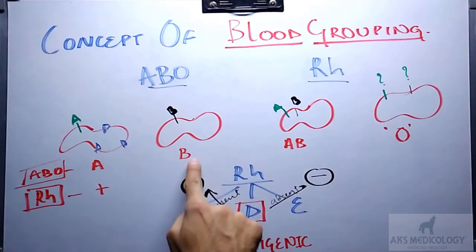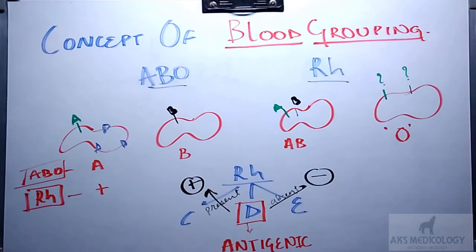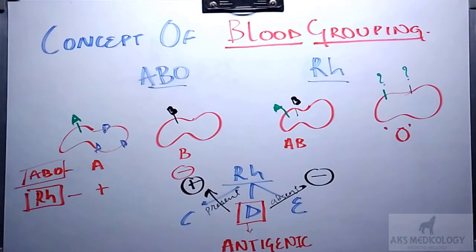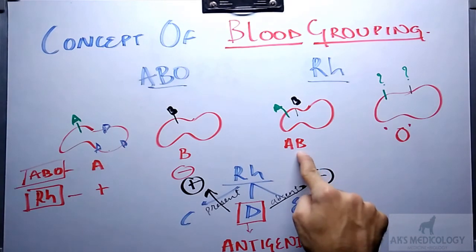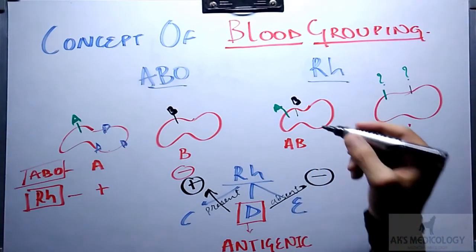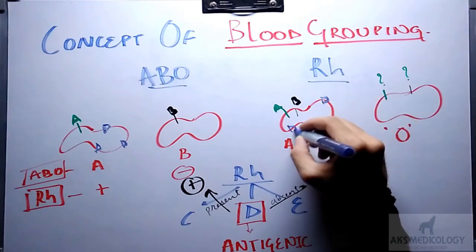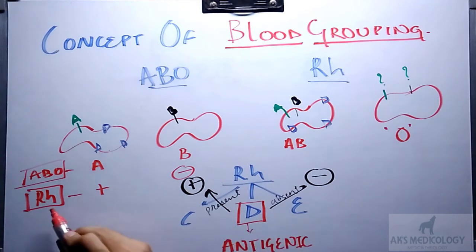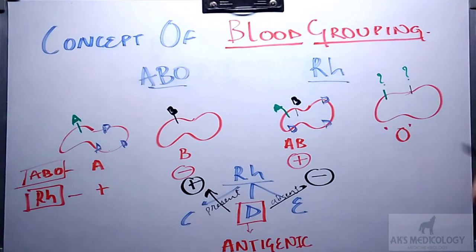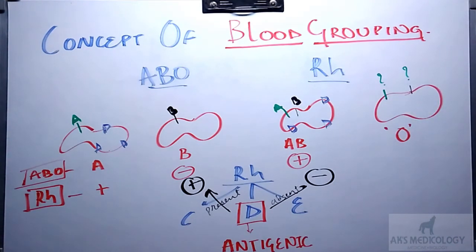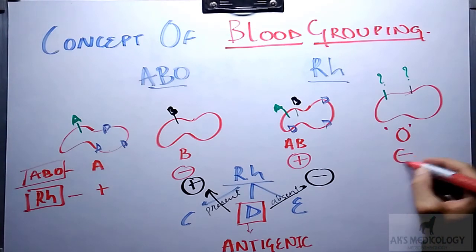For example, an individual with blood group B who lacks antigen D would be RH negative. An individual who is AB according to the ABO blood grouping system and possesses antigen D over the surface of their RBC would be RH positive. Similarly, if an individual possesses neither antigen A, nor antigen B, nor antigen D, the blood group of that individual, as it lacks antigen D, would be RH negative.